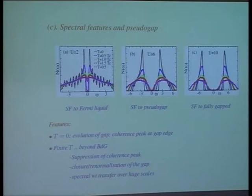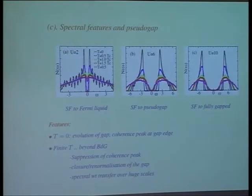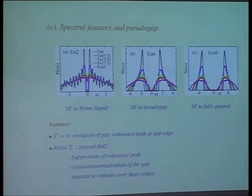Question about the phi field: the phi field is a spectator in the clean problem. The phi field is truly important in the disordered case, which Mohit and students have worked out. The phi field fluctuates, but the dominant fluctuations in the clean problem are coming from the deltas and not so much the phi's. The phi's will contribute a mean in the disordered case, but even those fluctuations are not very important in the clean phi's.